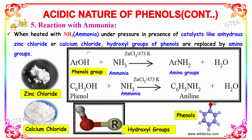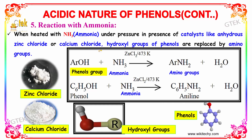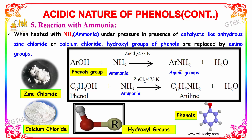When phenol is heated with ammonia under pressure in the presence of a catalyst like anhydrous zinc chloride or calcium chloride, the hydroxyl groups of phenols are replaced by amino groups. Phenol reacting with ammonia in the presence of zinc chloride at 473 K results in amino groups and water.